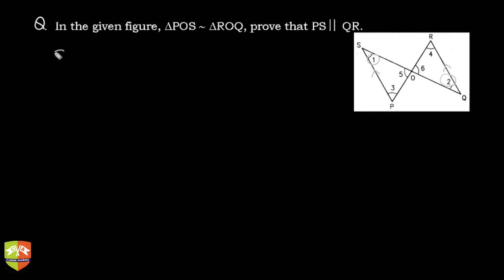How to prove that? First, let's write what is given. Given is triangle POS is similar to triangle ROQ. The moment this is given, by the condition of similarity, we know that the corresponding angles will be equal.